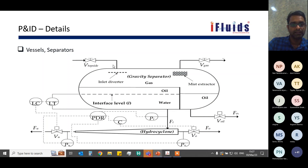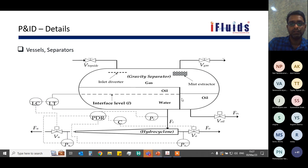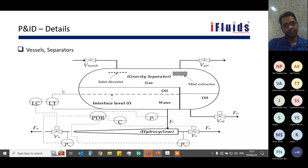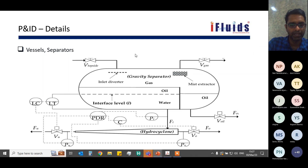In this typical vessel P&ID example, we can see an inlet diverter as the inlet device, a mist extractor, and an oil-water separator. There is an interface level measurement with a controller controlling the level. We have an inlet valve and a gas outlet valve, with a separate oil draining system. The vessel dimensions are also given in the P&ID.